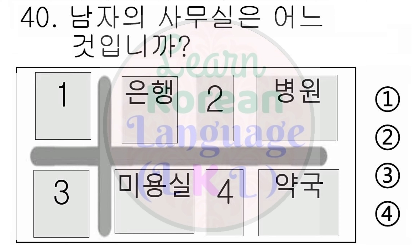32번. 어느 나라 사람이에요? 1번. 한국에 가요. 2번. 아침을 먹어요. 3번. 공장에서 일해요. 4번. 베트남에서 왔어요. 다시 들으십시오. 어느 나라 사람이에요? 1번. 한국에 가요. 2번. 아침을 먹어요. 3번. 공장에서 일해요. 4번. 베트남에서 왔어요.